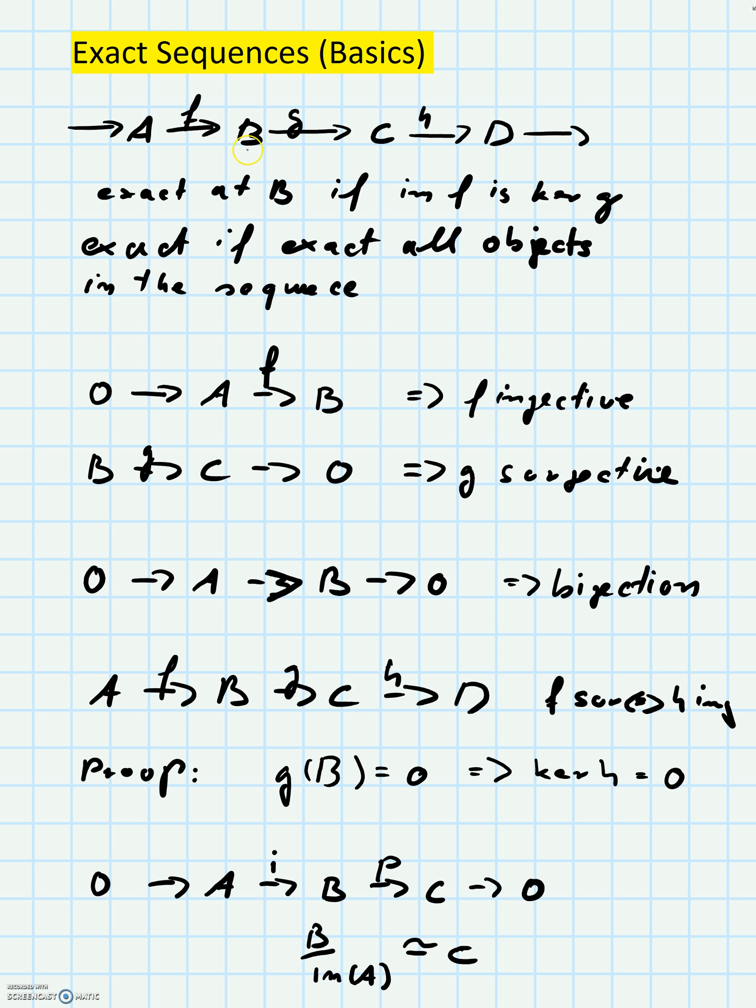Then you can define what it means for a sequence to be exact at an object. Suppose you want a sequence to be exact at the object B - this is defined to be the following condition: the image of this morphism F is the kernel of the morphism G. The sequence as a whole is said to be exact if it is exact at each object, so at A, B, C, D and so on.